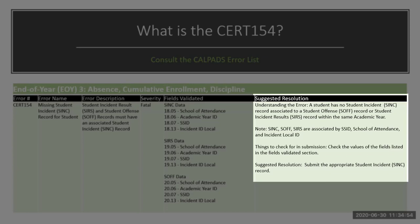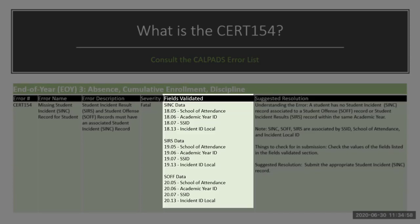The demonstration will give you a couple of options for fixing this error. The fields validated tell us that the SYNC data is validated against the SIRS and the SOF. What's not described in this particular error is that either an existing SIRS or SOF can trigger a CERT 154 for a missing SYNC or missing Student Incident. You may have two records — what we call orphan records — that are not associated to a SYNC. In the demonstration, we'll show you how to use the error list and put everything together.